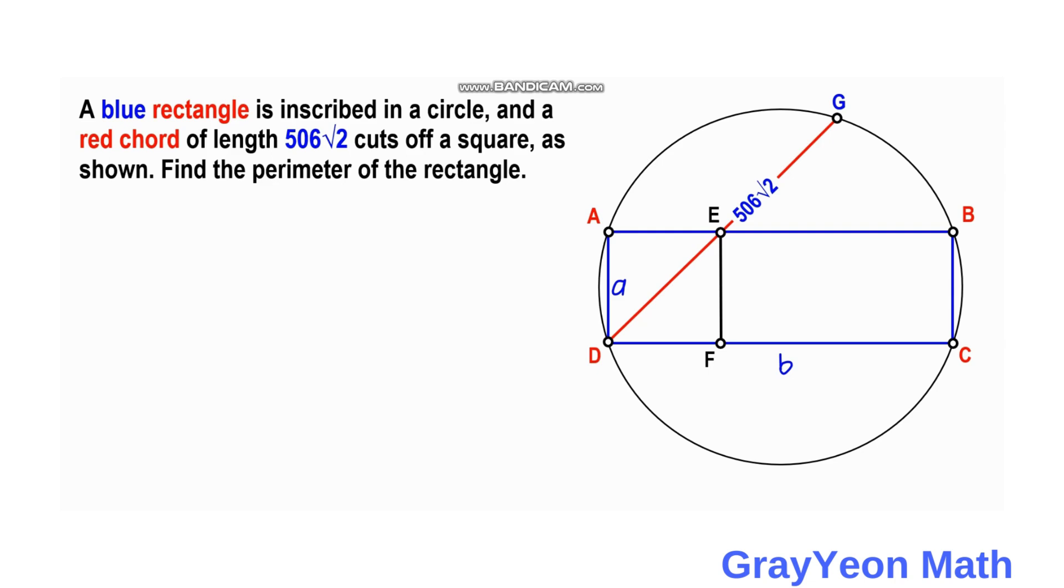So this will be a√2. The diagonal of any square is √2 times the side. And since this is a square, all the sides will be the same length. So this will be a, and EF and DF will be a also.